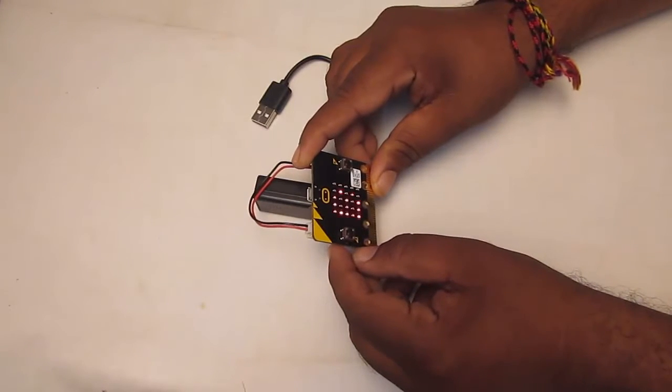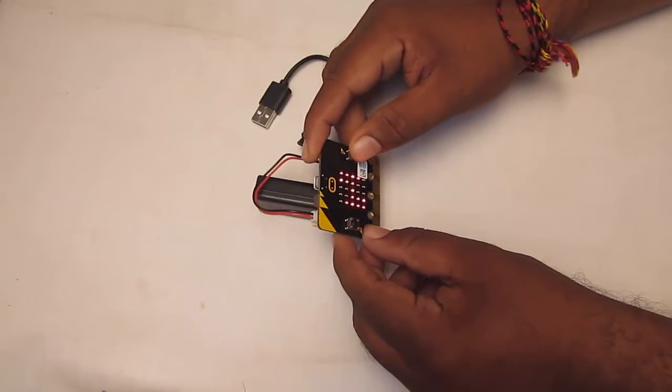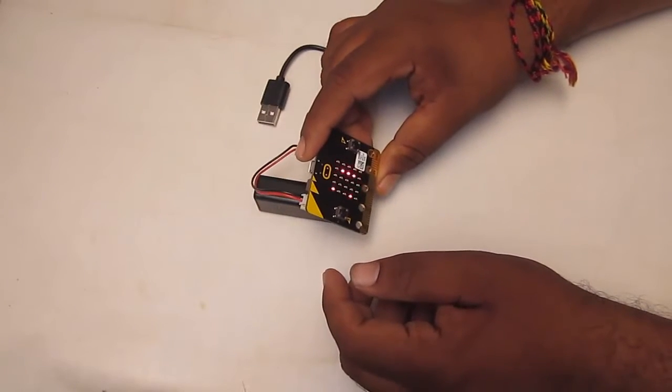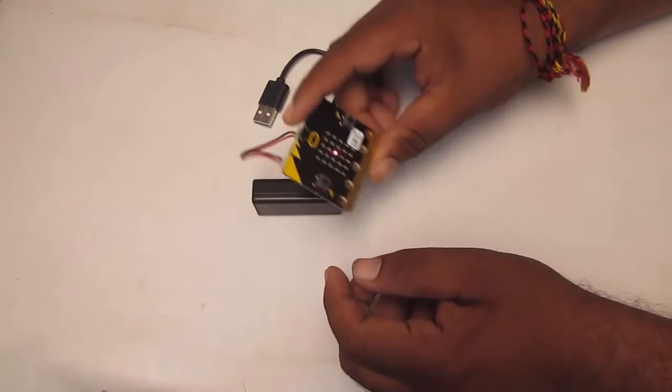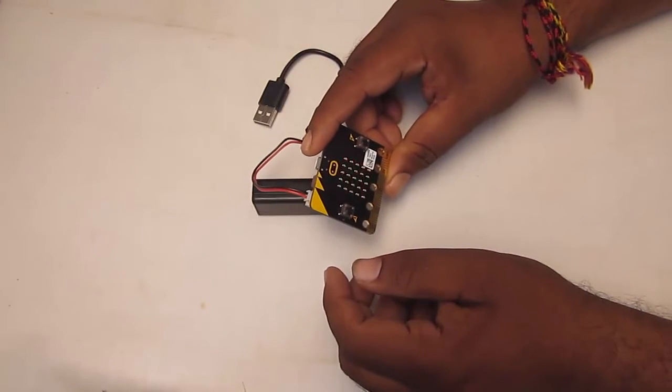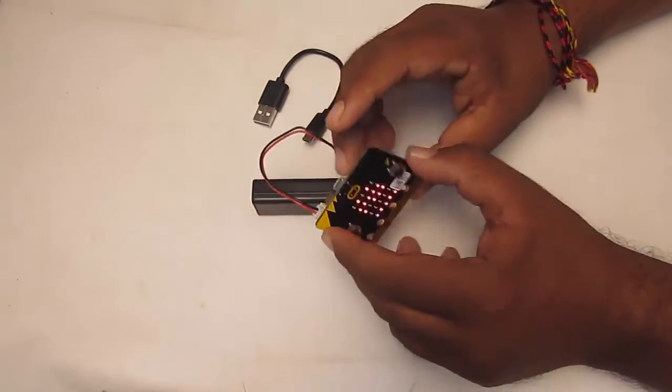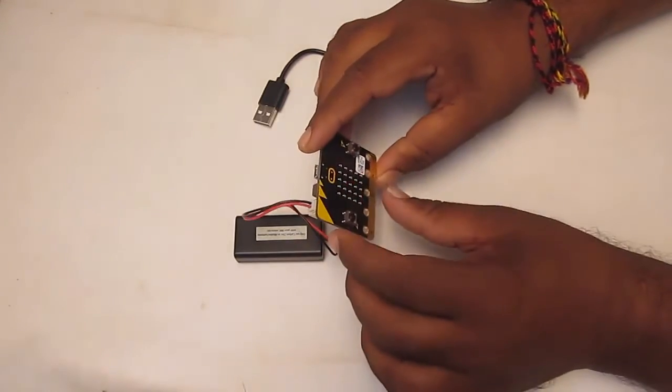Now it's asking to press button A, now button B. When you shake it, it's just doing some pattern on the screen.